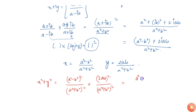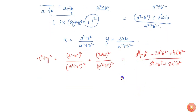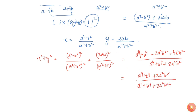Expanding the numerator: a squared minus b squared whole squared gives a to the power 4 plus b to the power 4 minus 2a squared b squared, and 2ab whole squared gives 4a squared b squared, which simplifies to a power 4 plus b power 4 plus 2a squared b squared. The denominator is also a power 4 plus b power 4 plus 2a squared b squared. Since both are equal, the result is 1.